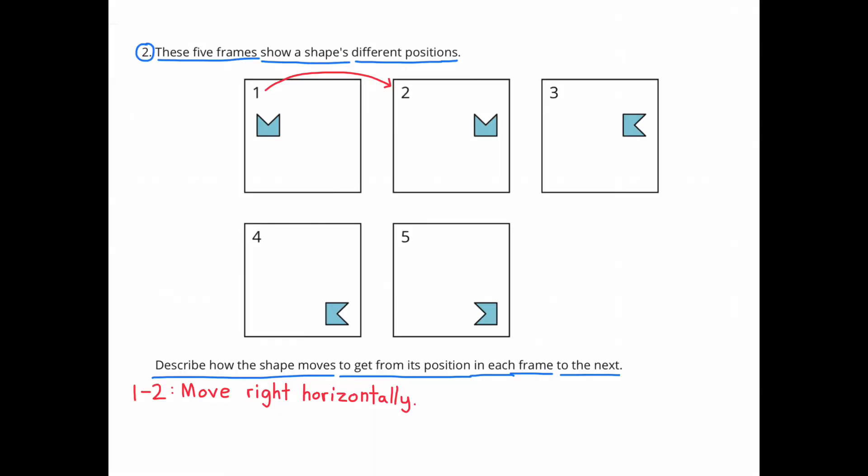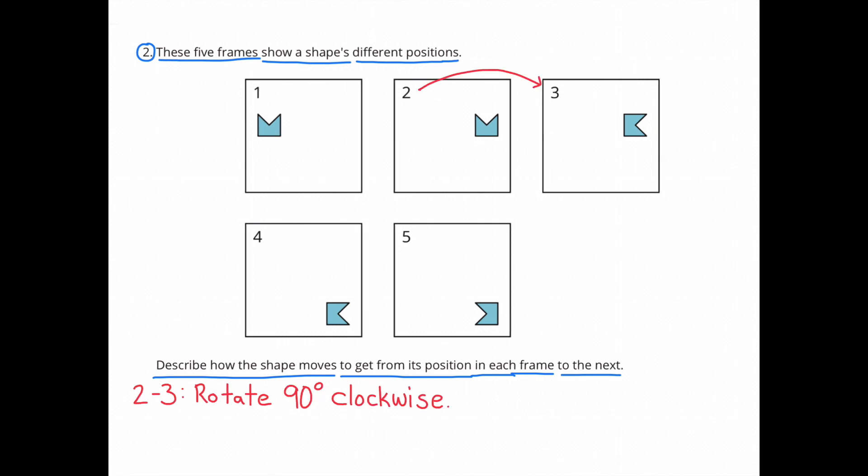From frame 1 to frame 2, the shape moves to the right horizontally. From frame 2 to frame 3, the shape rotated 90 degrees clockwise.